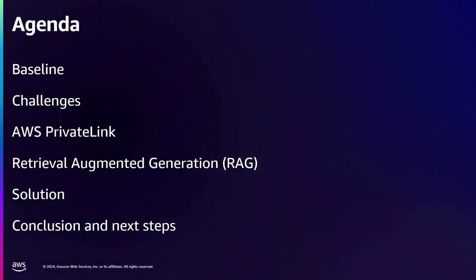Here's how we're going to go through this. We're going to get a baseline — talk about some baseline Gen AI understanding, some of the challenges we have with it, and then we're going to talk about PrivateLink and how it fits. Then we'll cover retrieval augmented generation, or RAG. Then I'll show you the solution and some screenshots of the code, and leave you with next steps: a workshop on generative AI with LangChain doing RAG, and my contact information.